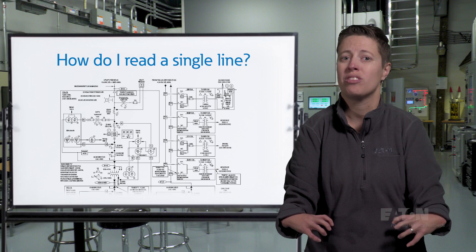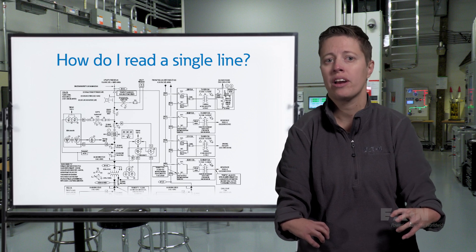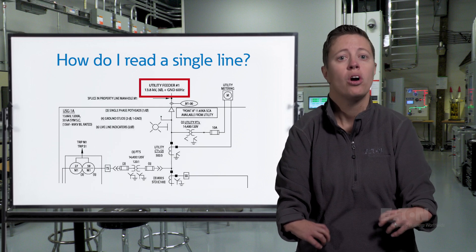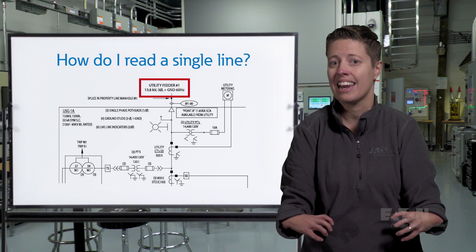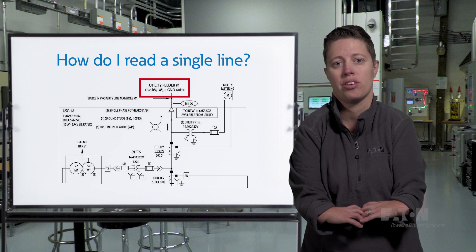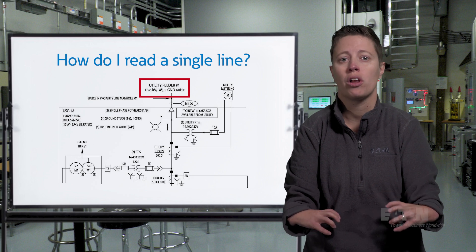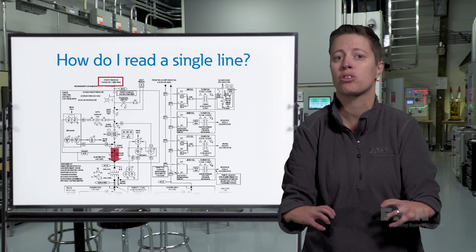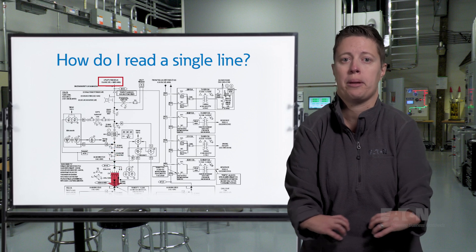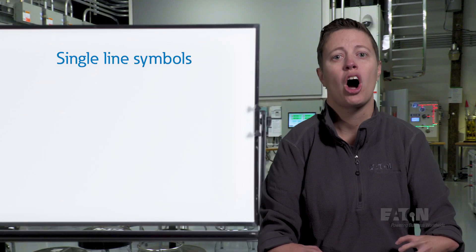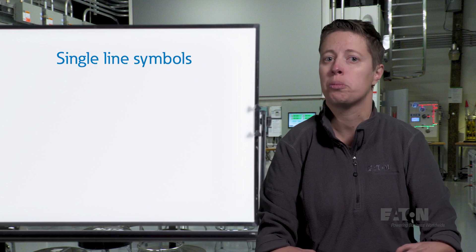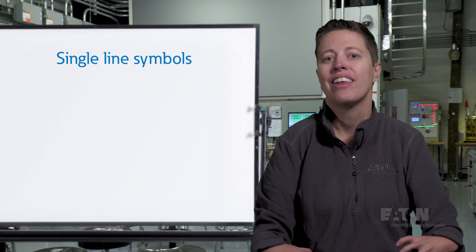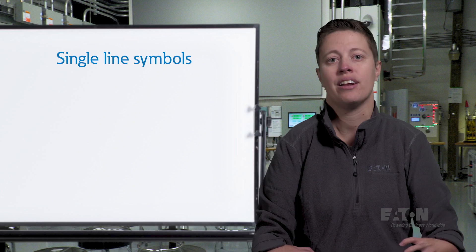A single line drawing is typically read from top to bottom or left to right. If the system is fed by utility power, look for a downward arrow, utility transformer, or reference to a utility connection to signal the start of the system. From there, you can follow the lines downstream to the loads, likely passing through several pieces of electrical distribution equipment along the way. There are dozens of symbols that are commonly found in electrical distribution single line drawings. Let's start with the basics and then look at an example system.